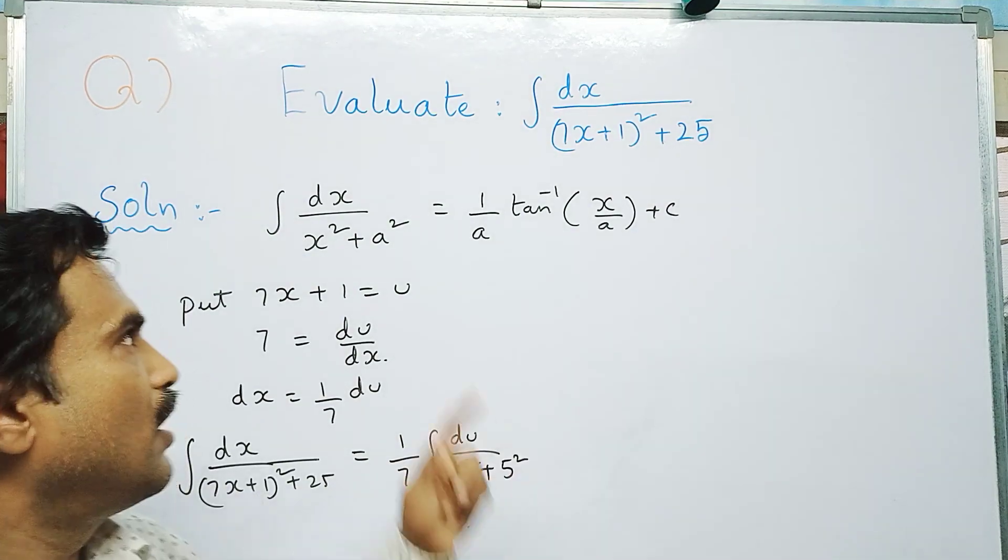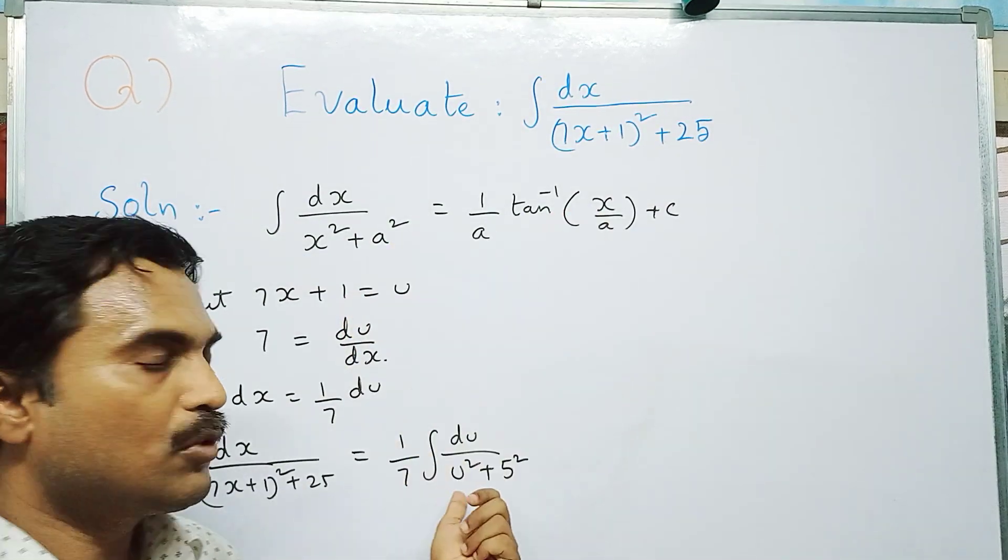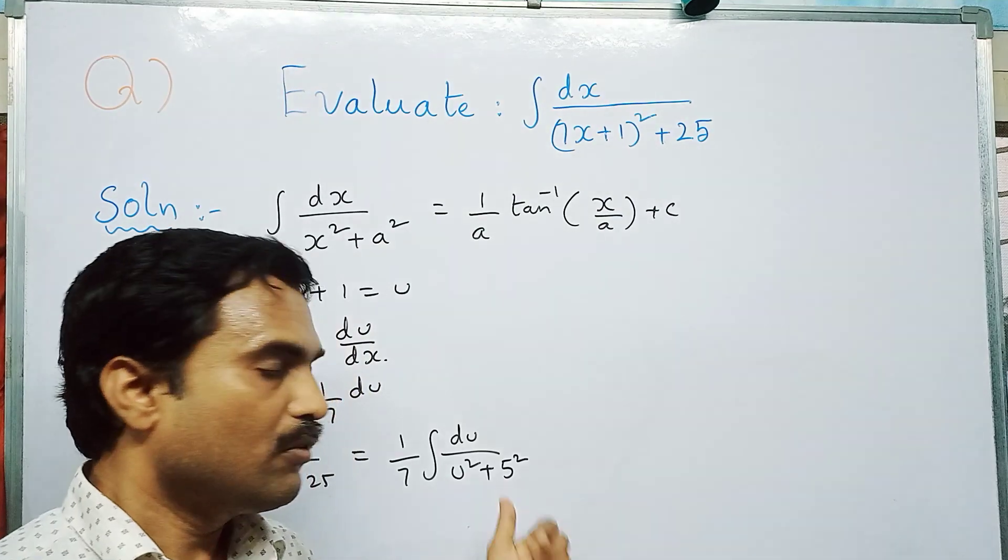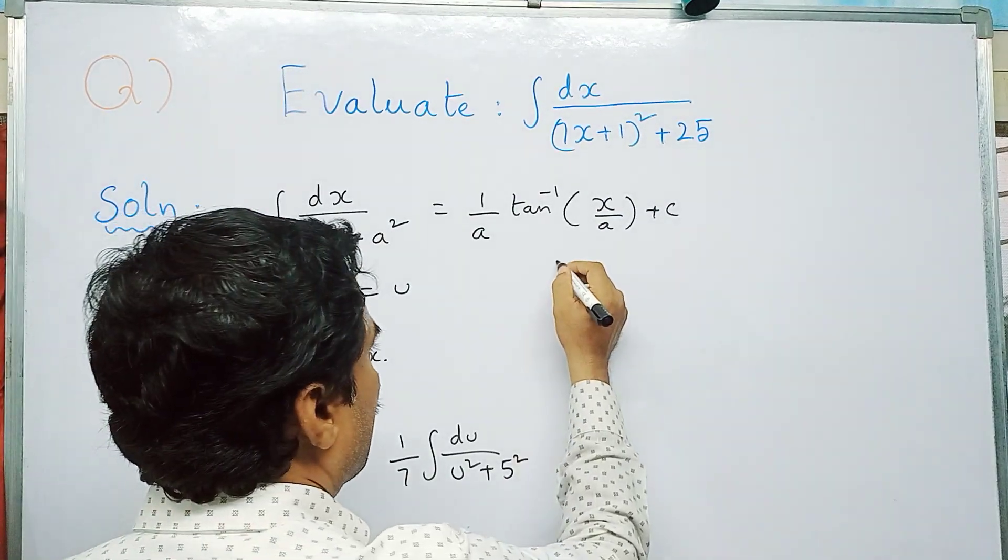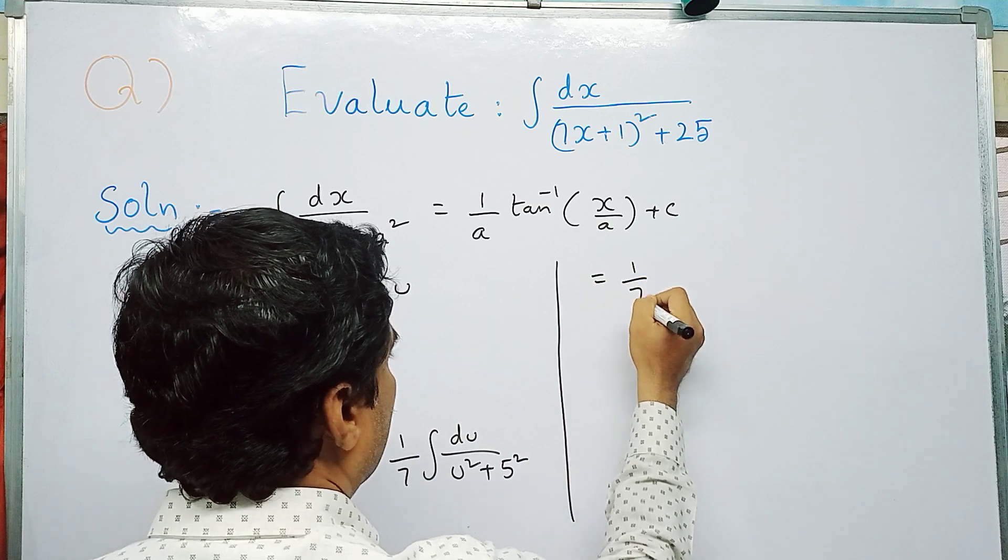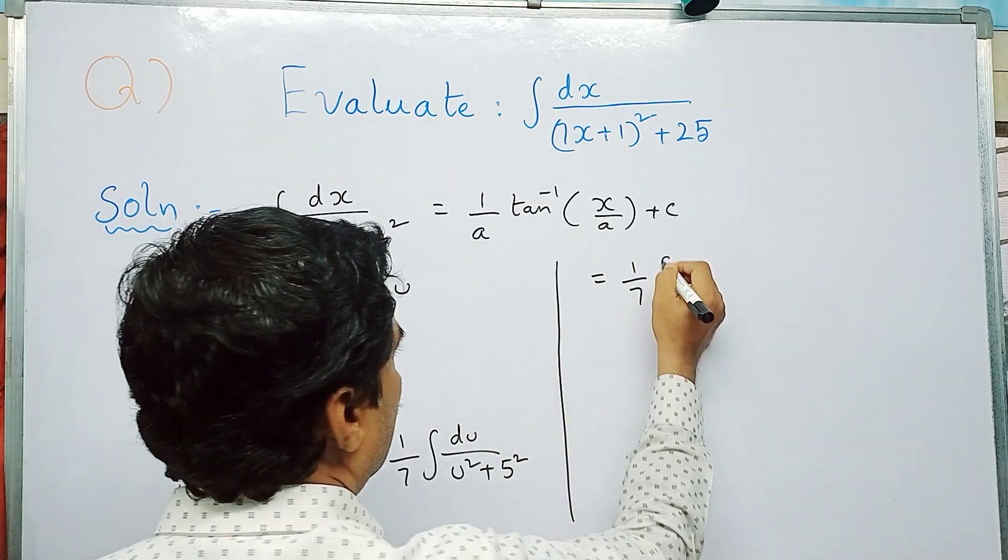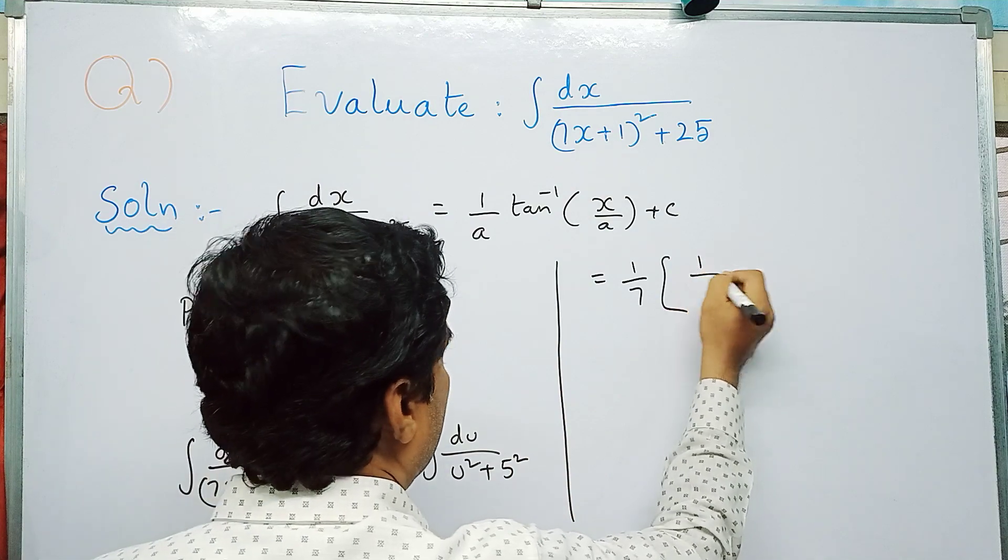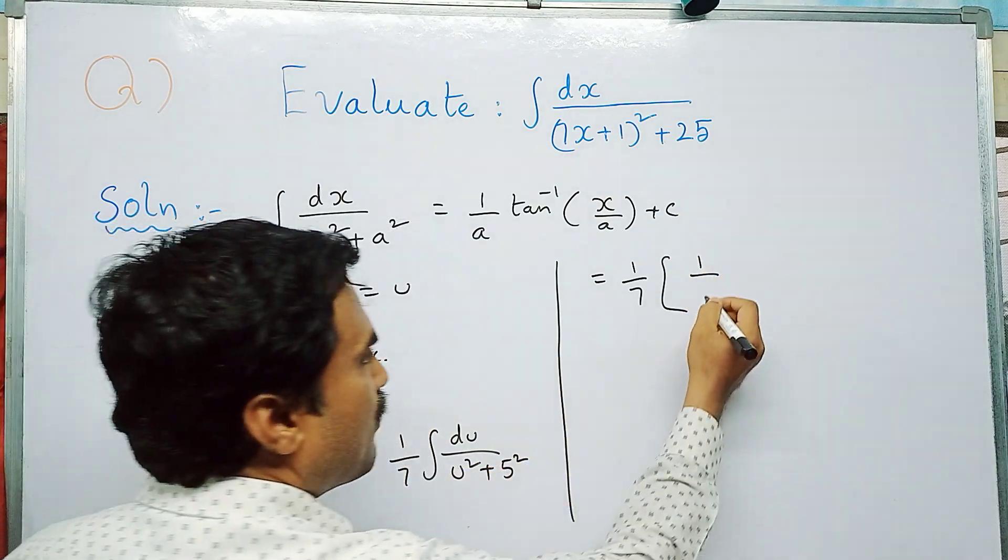After applying this formula, you can write this as 1 by 7 into 1 by 5 tan inverse (u/5) plus c, where in place of x you put the variable u and in place of a you put 5. This equals 1 by 35 tan inverse (u/5) plus c.